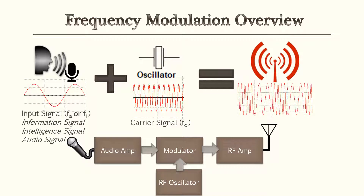Very similar to amplitude modulation, you're going to take your input signal — which is your audio — add your oscillator, which is going to be your carrier signal, and then your output is going to be your modulated signal. Unlike amplitude modulation, this is a frequency modulator, which means your frequency is going to change and adjust based on your input.